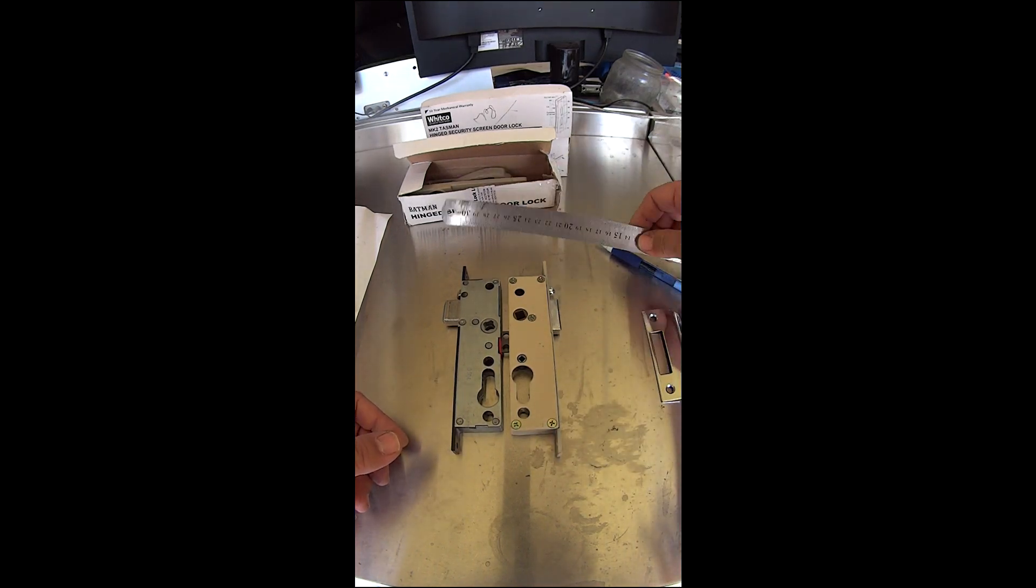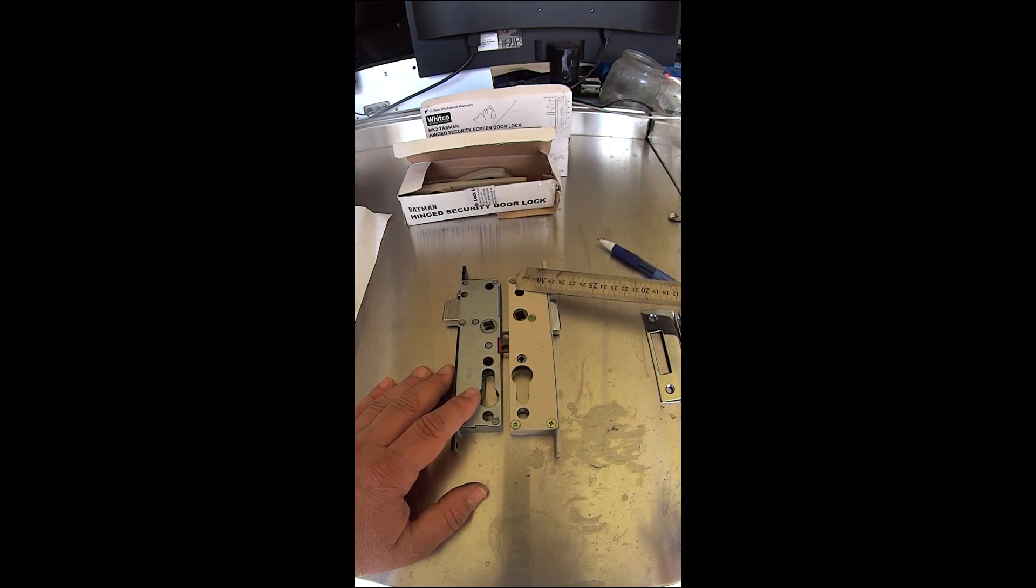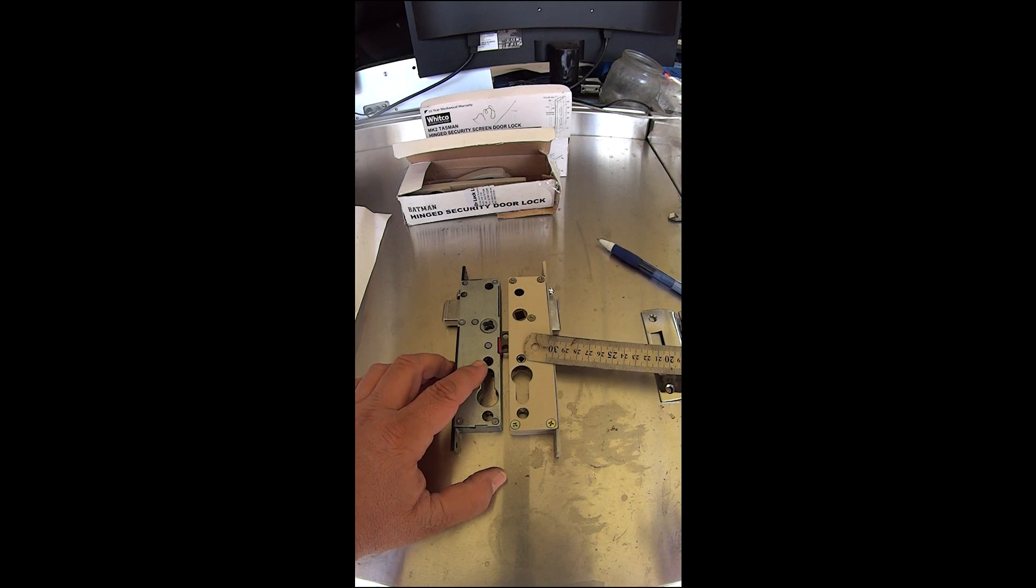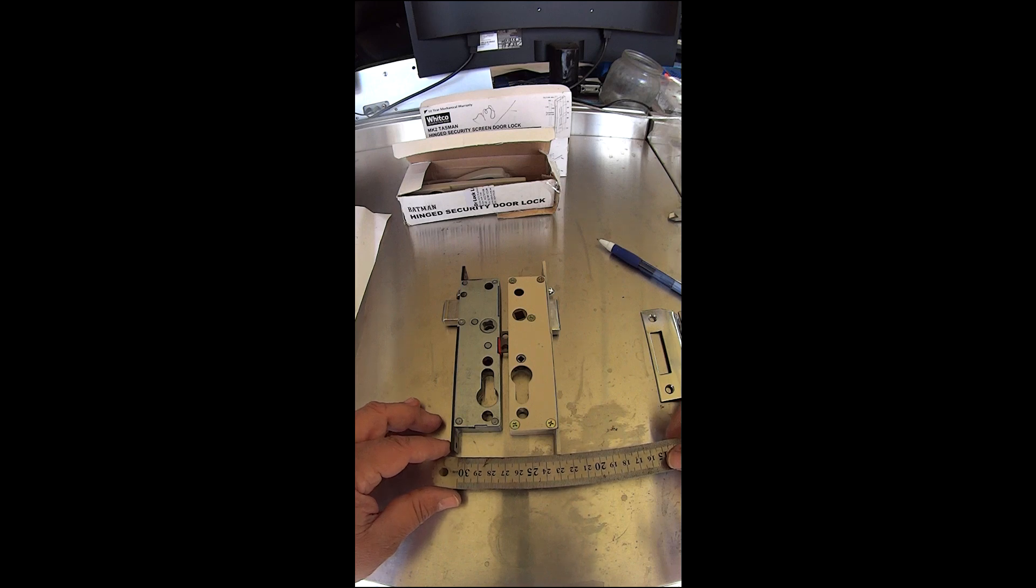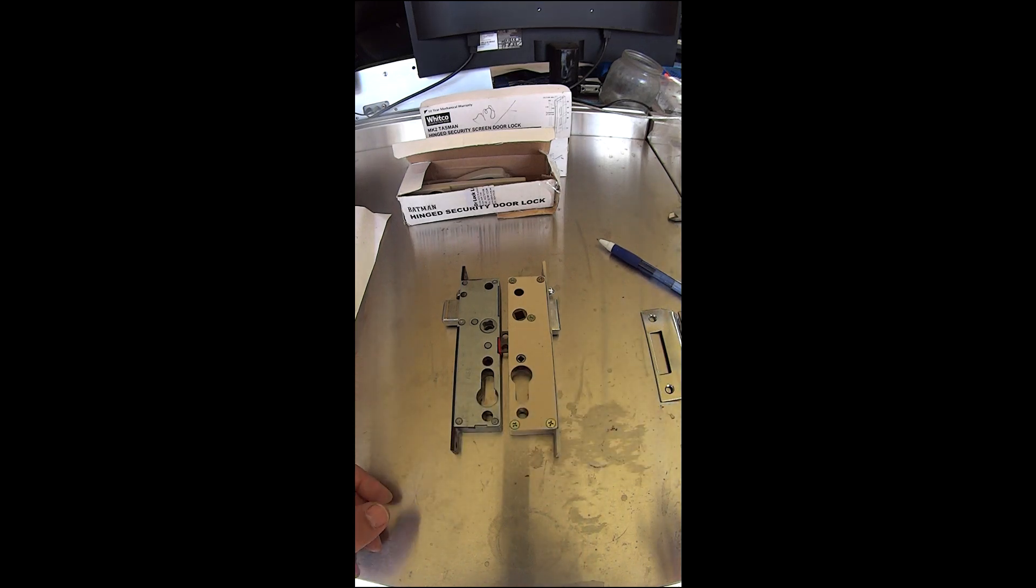Looking at it once again, our handle hole - they're different, our spindle different. The inside turn knob about the same, cylinders about the same, bottom hole about the same, and our bottom screw hole there is a difference there but these are only small modifications that can easily be done. Our striker plate, once again I'll show you that a little bit closer.